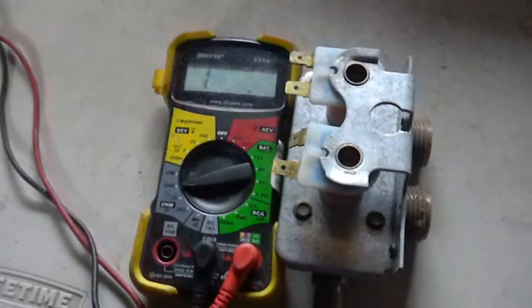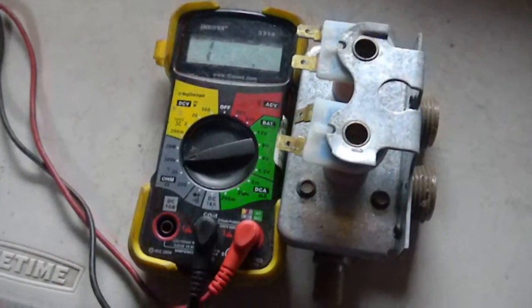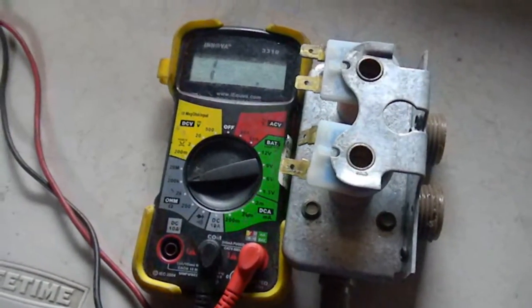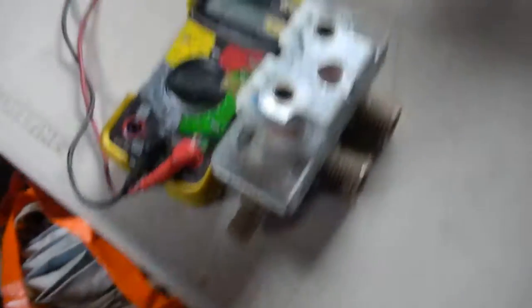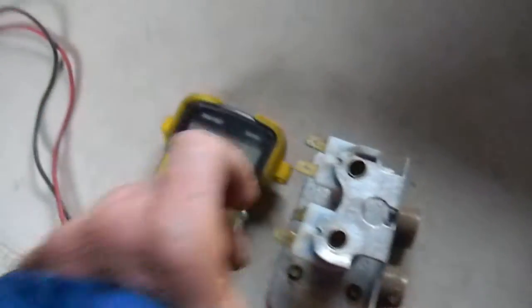Basically if your washing machine doesn't let either the hot or cold water in, here's one of the things you want to check. You don't normally have to pull the valve out, but in this case you have the valve out.